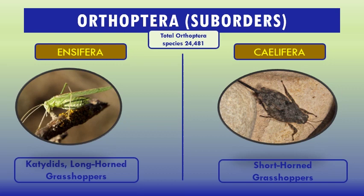Orthoptera is divided into two sub-orders: Ensifera and Caelifera. Ensifera are the long-horn grasshoppers and Caelifera are the short-horn grasshoppers. For example, this is a long-horn grasshopper — they have long antennae — and this is a short-horn grasshopper — it has short antennae.